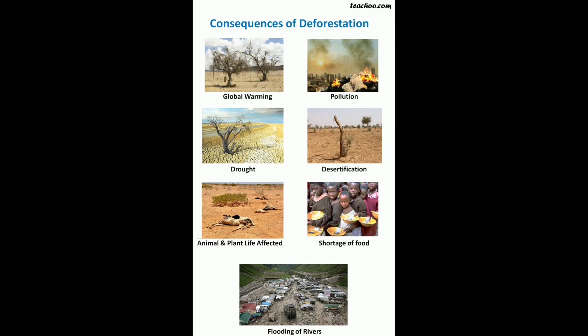Deforestation also leads to a decrease in the water holding capacity of the soil. The movement of water from the soil surface into the ground — the infiltration rate — is reduced, so there are floods. Other properties of the soil like nutrient content and texture also change because of deforestation.